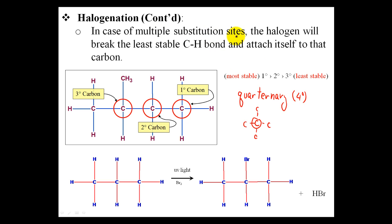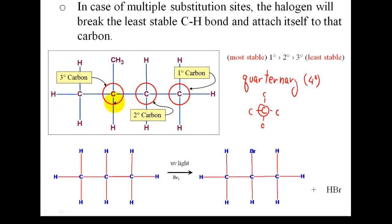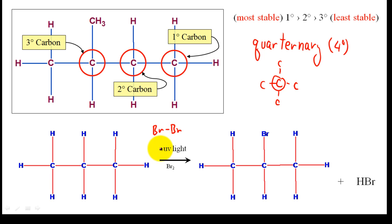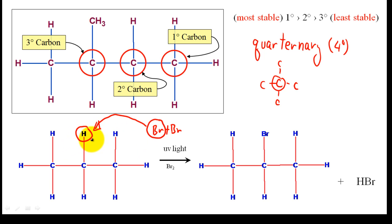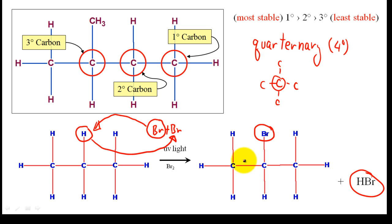Knowing this, in cases of multiple substitution sites, the halogen will break the least stable carbon-hydrogen bond and attach to that carbon. So the tertiary carbon, being the least stable, is where the halogen will attach. In the example shown, we break apart the bromine with UV light or heat, and then determine whether each carbon is primary or secondary. Since primary is most stable and secondary is less stable, the bromine attaches to the secondary carbon, removing its hydrogen to form hydrobromic acid. That gives us our alkyl halide.